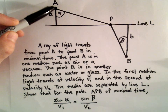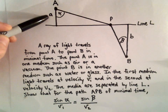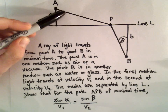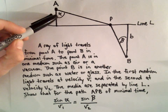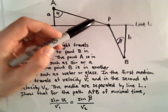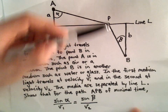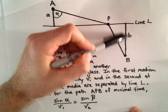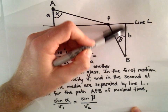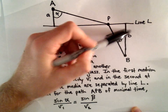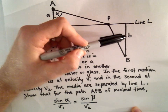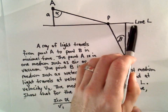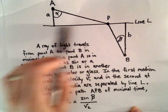The media are separated by a line L, and what we have to show is that for the path A, P, B of minimal time, sine of alpha divided by V sub 1 equals sine of beta divided by V sub 2. My point A has a little height here of lowercase a, and it makes an angle of alpha. There's our point P, and there's our point B. It's got a distance below the line L of lowercase b, and this is the angle beta, separated by line L.